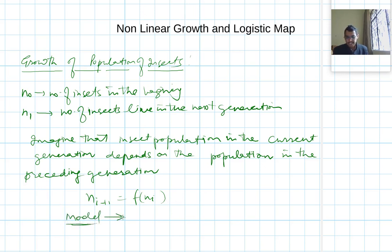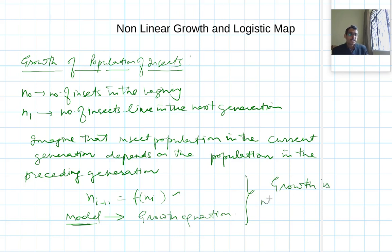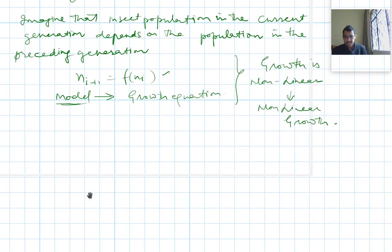This model which we have designed here is known as the growth equation. If growth is non-linear, then we call it non-linear growth. The equation governing this non-linear growth model is known as the logistic map.